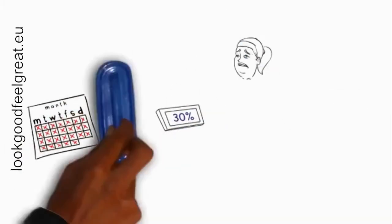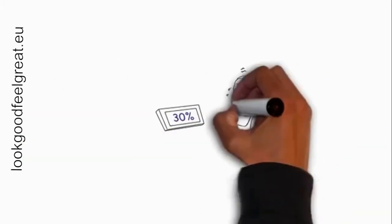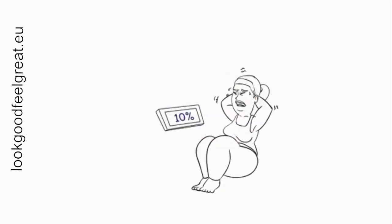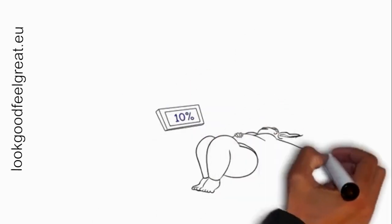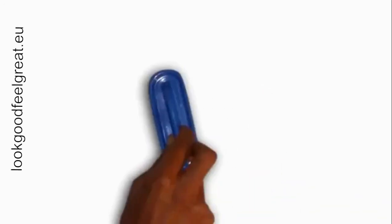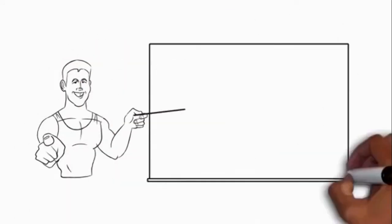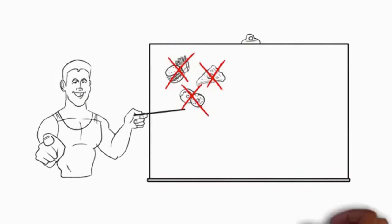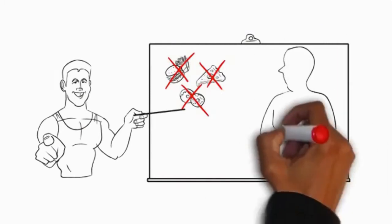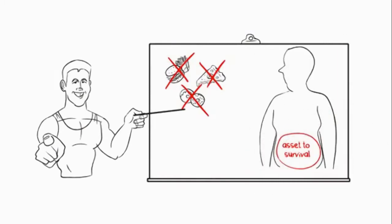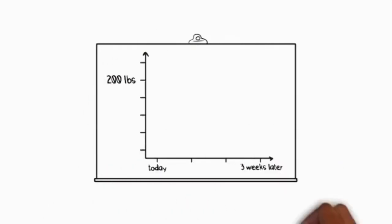And as if that wasn't bad enough, with every pound you do struggle to lose, leptin levels fall even further, making it even more difficult for you to continue to lose fat. Why? Because, as mentioned, in the face of calorie restriction, your body views stored body fat as an asset to survival. The more fat you lose, the more danger your body senses, and the harder it is to strip away that next pound. Hello, fat loss plateaus.